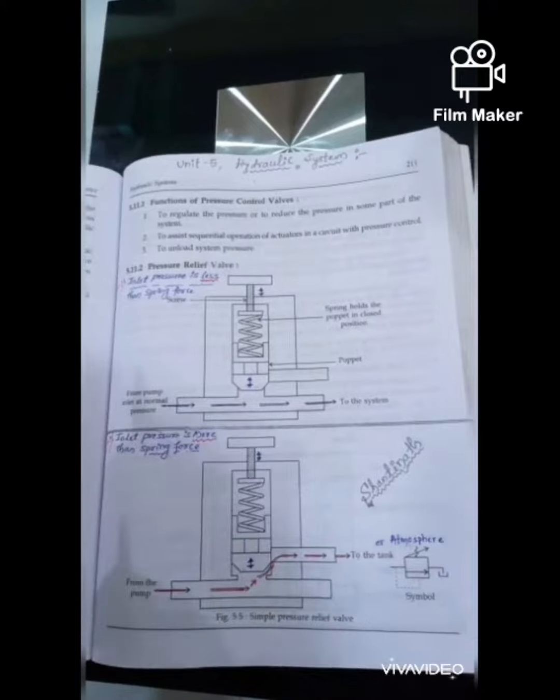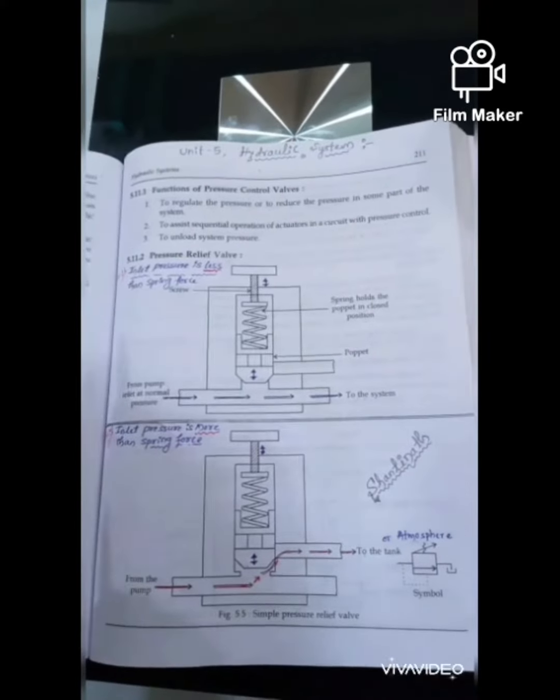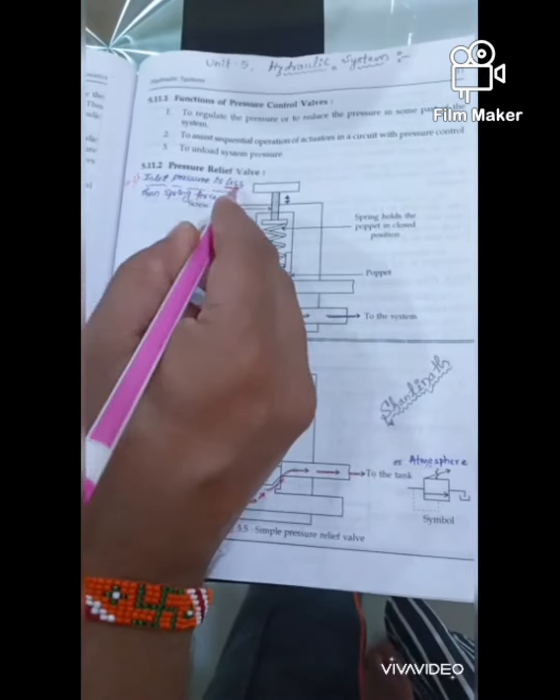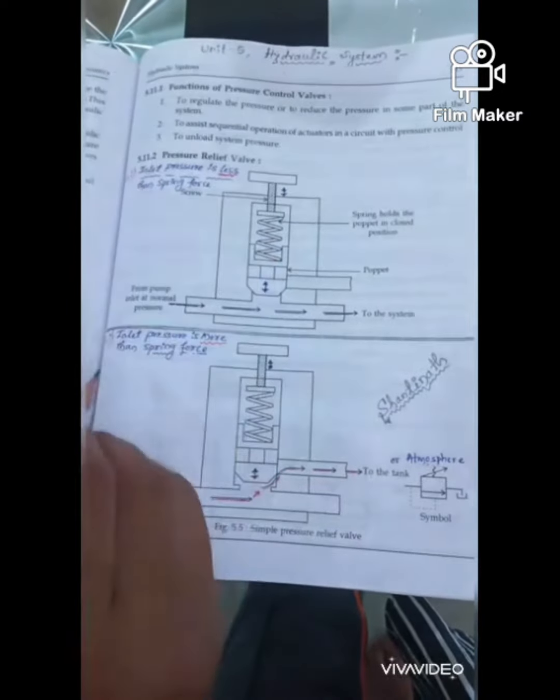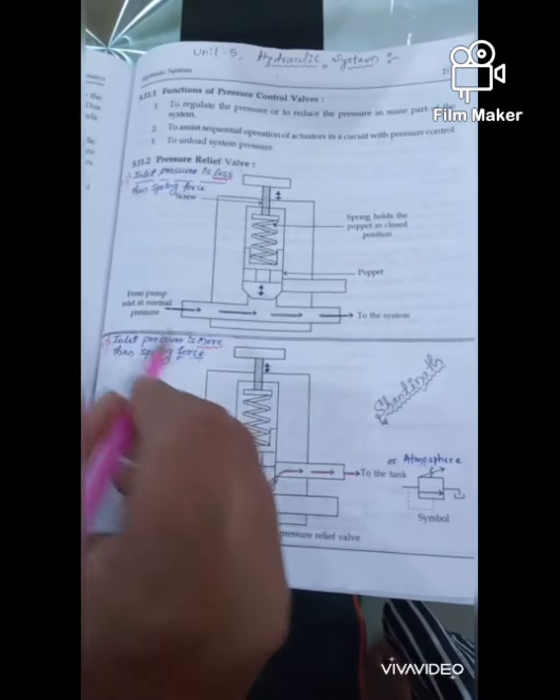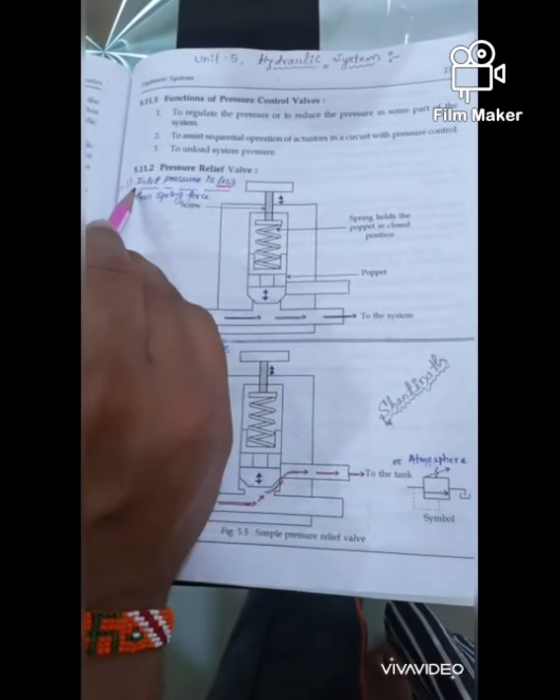In the fourth and fifth points we have two cases. Case one is inlet pressure is less than the spring force. Case two, inlet pressure is more than the spring force. So let's discuss case one.